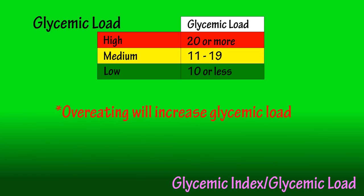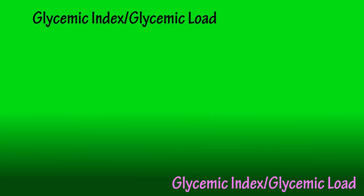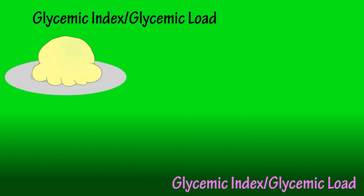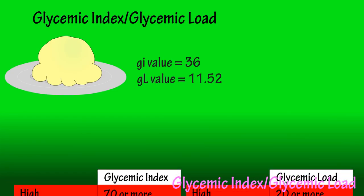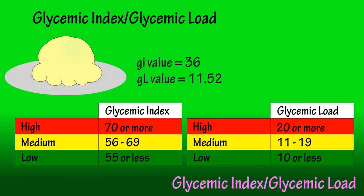I'll put a couple of links in the description box below where you can see the glycemic index and glycemic load of many different foods. The glycemic index and glycemic load are not foolproof — let's take a look at ice cream. It has a glycemic index of 36, and a serving size of one cup yields a glycemic load of about 11.52 — so a low glycemic index and a medium glycemic load.